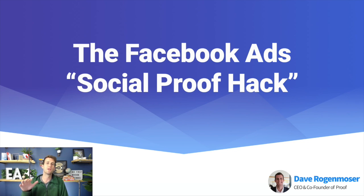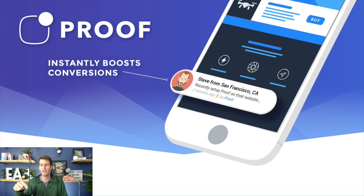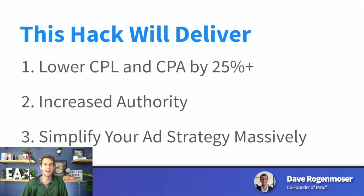Hey, what's up guys, Dave here. In this video I'm going to show you the Facebook ads social proof hack that we've been testing for almost a year, that has proven to get way better results on your Facebook ads than anything else. This hack is going to deliver lower CPLs — cost per lead and cost per acquisition — by 25% plus if you execute it correctly. It's going to give you increased authority, make your ads look way more powerful, and simplify your ad strategy massively.